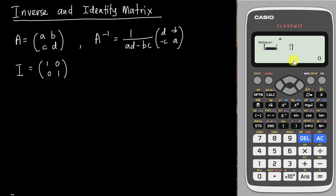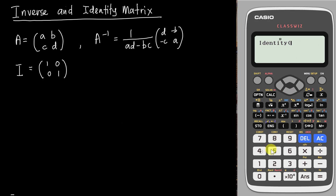If you tap 3 the calculator gives you a 3×3 identity matrix, and if you tap 4 it gives you 4×4. For example, tapping 3 gives a 3×3 identity matrix — that's something you'll learn at STPM or A-Level in the future, not at this level.